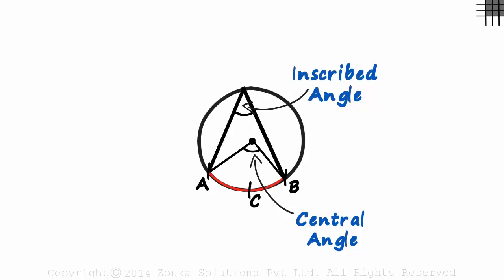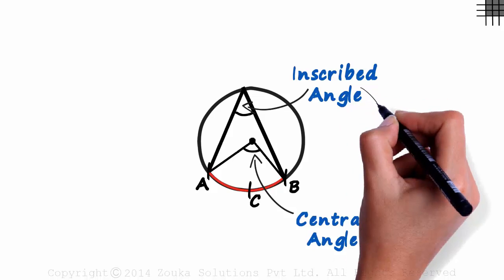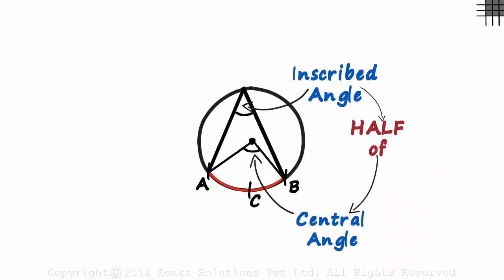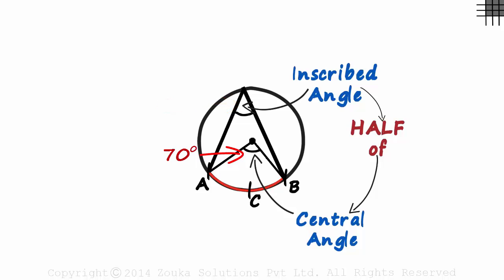Now we come to the most vital point of this session: the inscribed angle is exactly half of the central angle that subtends the same arc. If the central angle is 40 degrees, then the inscribed angle measures 80 degrees. Conversely, if the inscribed angle is 70, then the central angle will be 35 degrees.